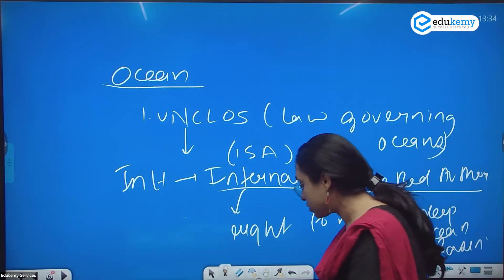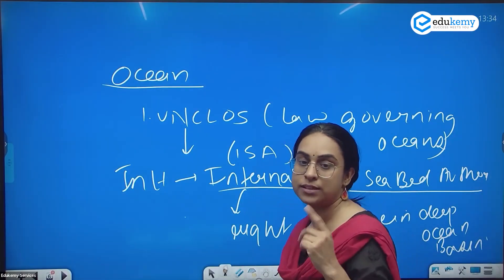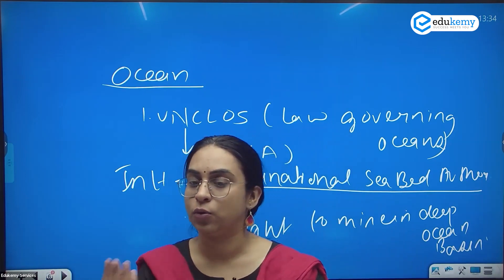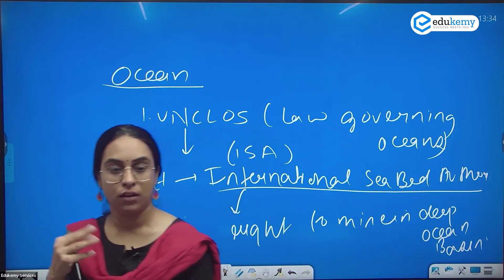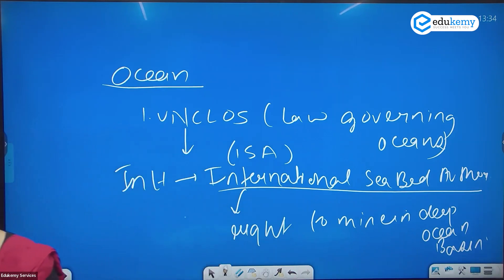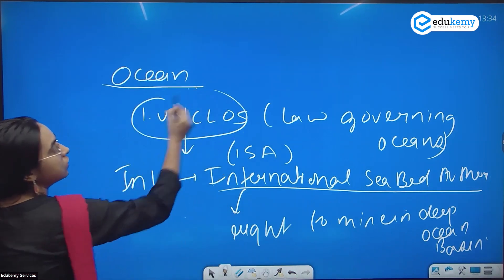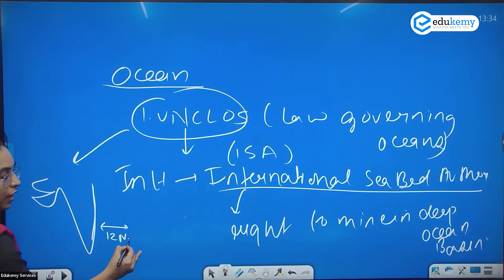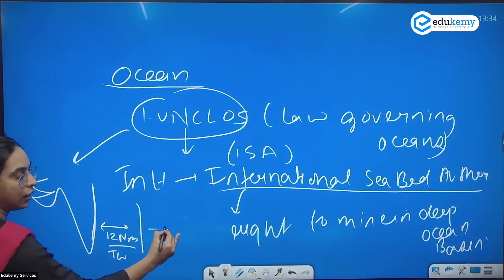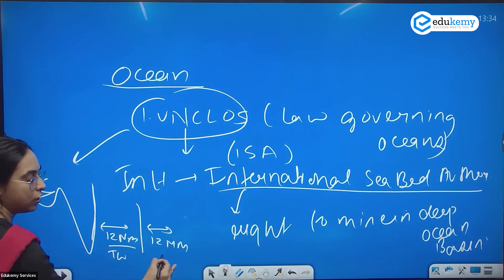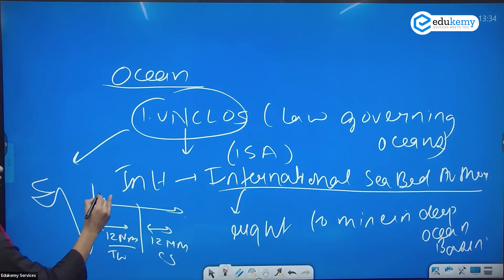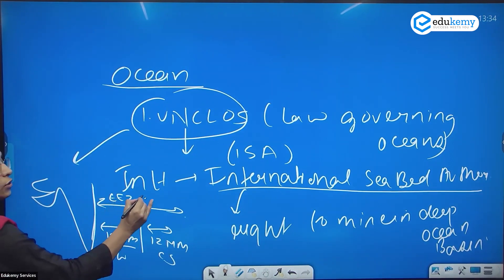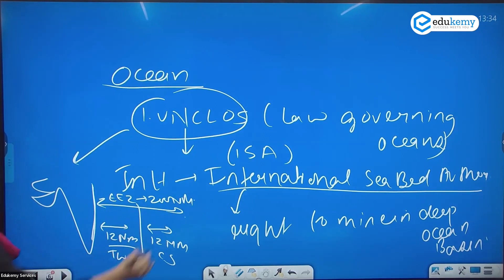A question was asked in the 2022 UPSC Prelims about maritime zones. Under UNCLOS, certain zones are marked: from the land up to 12 nautical miles we have territorial waters, then another 12 nautical miles is the contiguous zone, and from the land up to 200 nautical miles is the Exclusive Economic Zone, or EEZ.